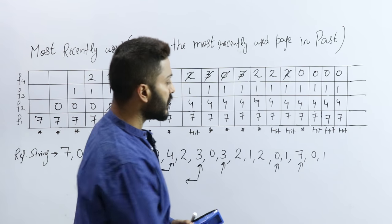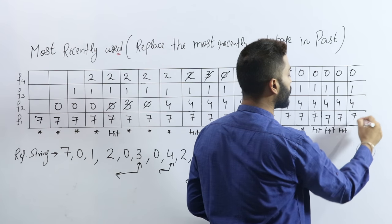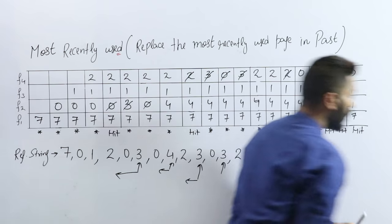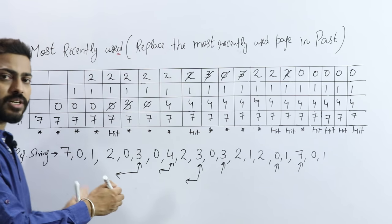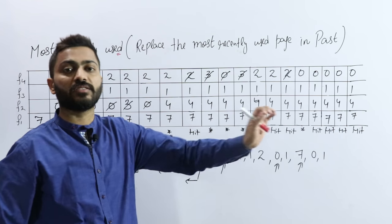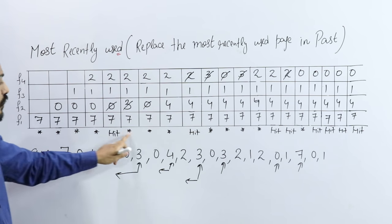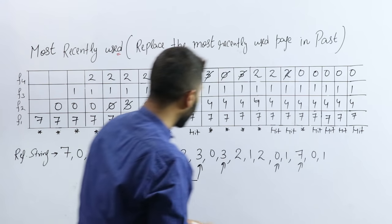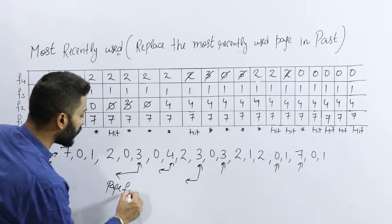Next, page number 1 — that is the last page. Is it present? Yes, it is already present — that is a page hit. So this is how the Most Recently Used method works: the page whose demand just occurred, the page the CPU just called, we replace that page. Counting the page faults: 1, 2, 3, 4, 5, 6, 7, 9, 10, 11, 12 — so total page faults are 12.